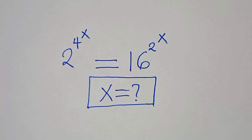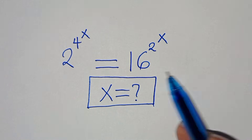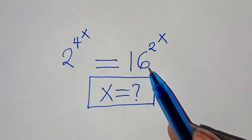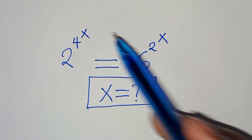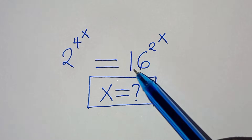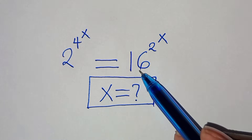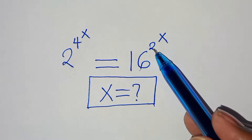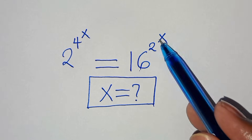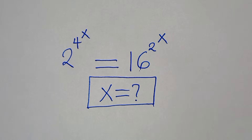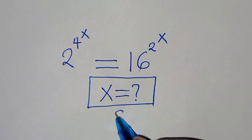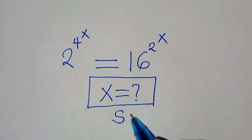Hello everyone, you're welcome to solve this nice exponential math problem, which is 2 to the power of 4 raised to the power of x, and this is equal to 16 raised to the power of 2 raised to the power of x. So what is the value of x? Now let's provide a solution.